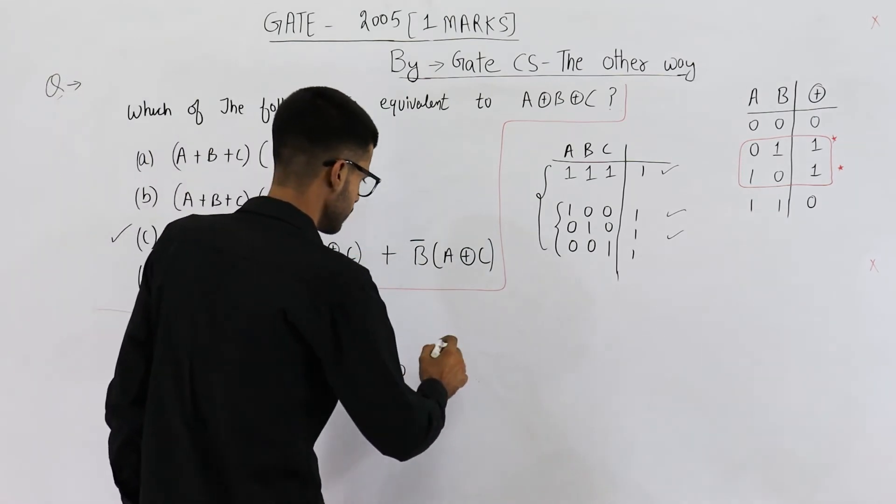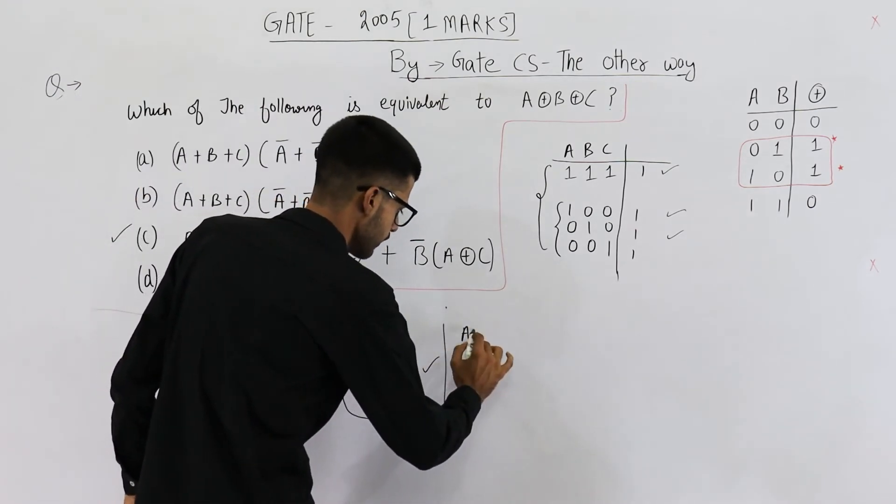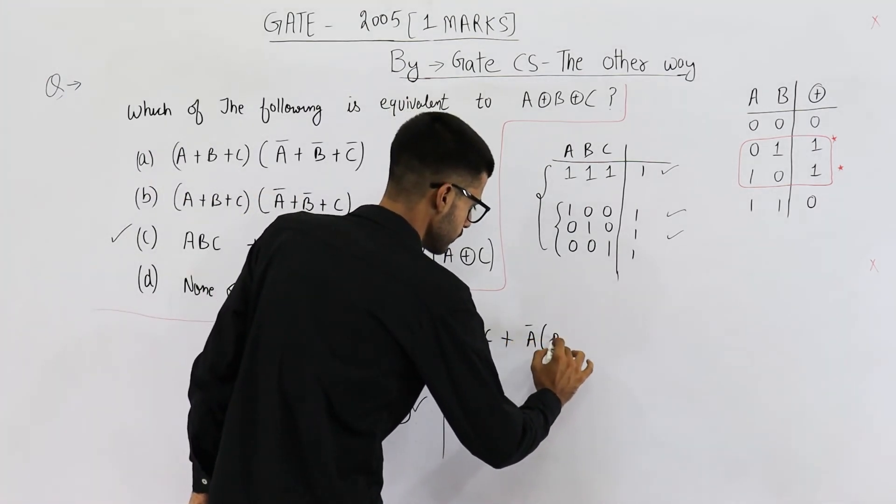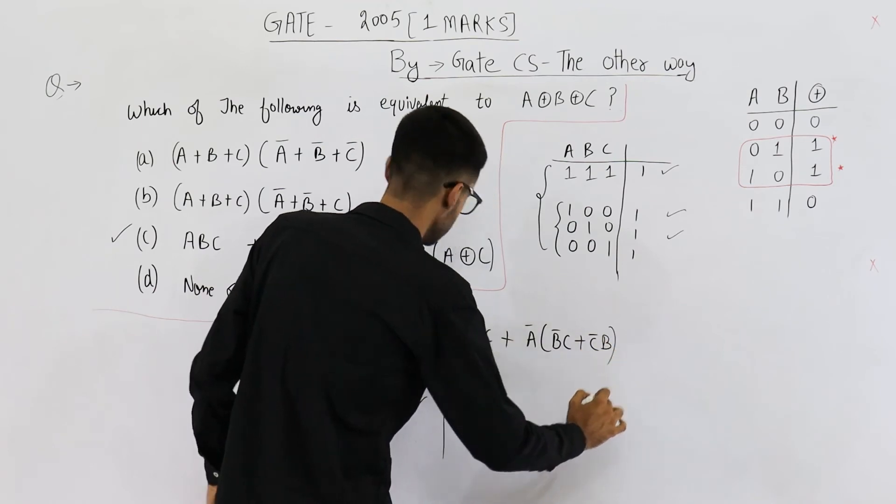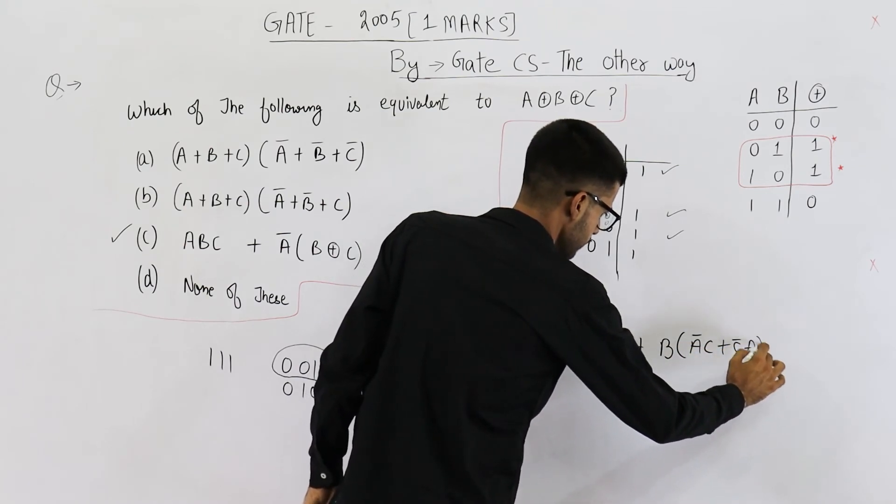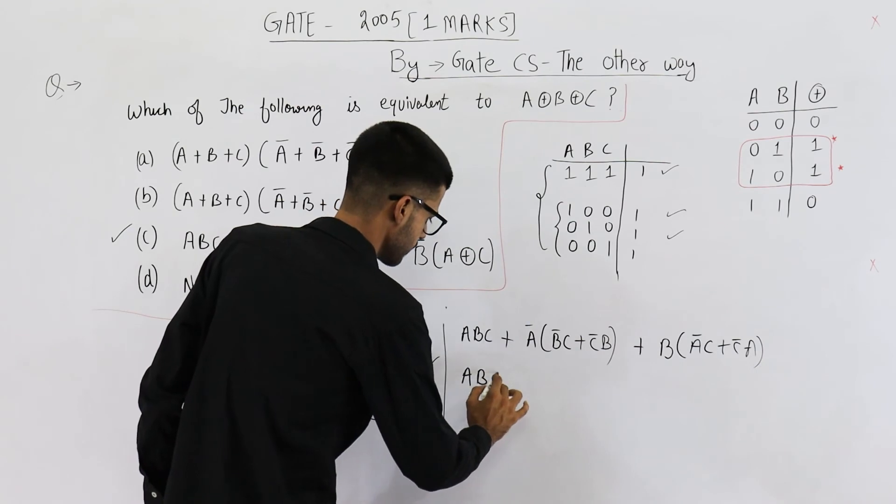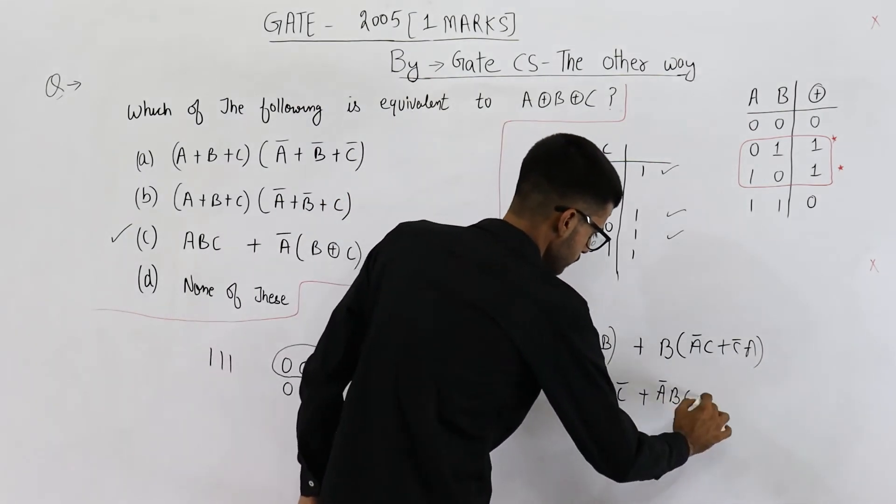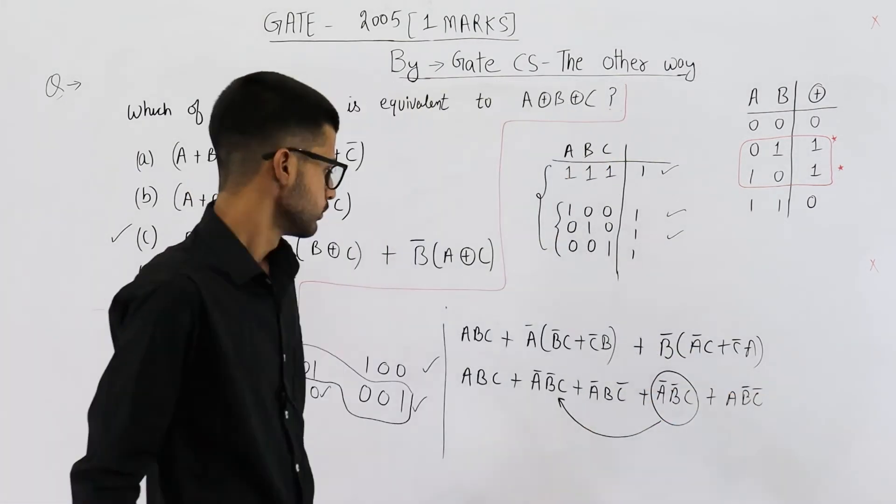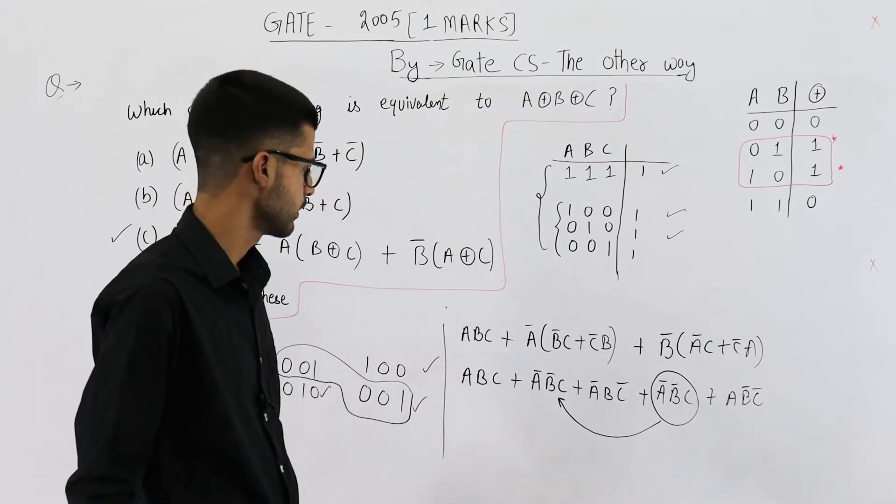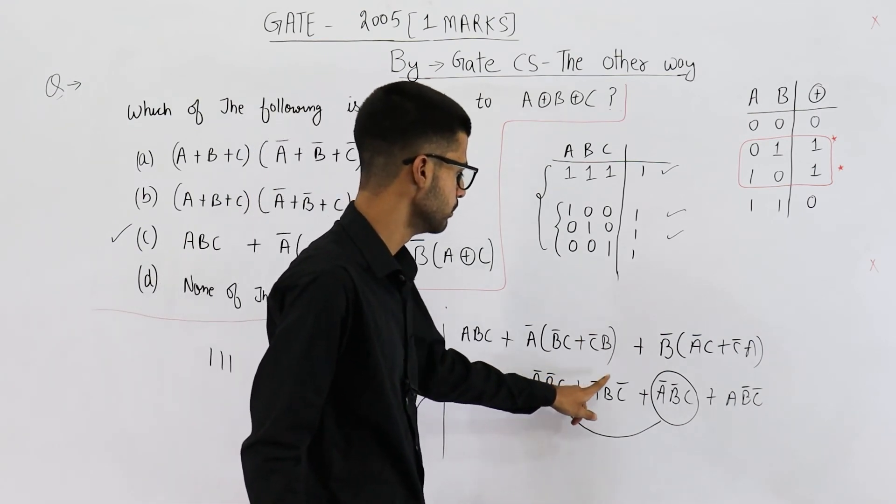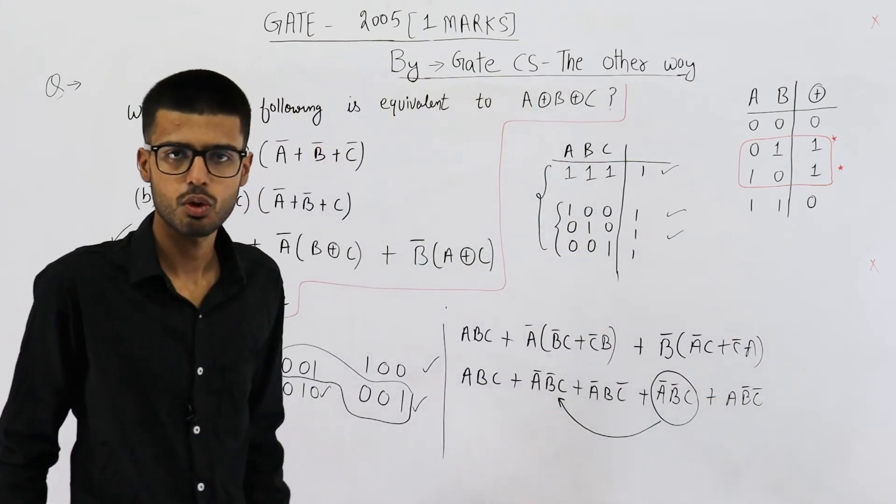And you can also expand it. If you want to expand it. See, we have ABC, ABC plus A bar into B bar C plus C bar B. Then you have B bar into A bar C plus C bar A. So this will come out to be ABC plus... So you can see, this is what we get on expanding it. This is all 1s. And C is 1, B is 1, or A is 1. So the answer is option C.